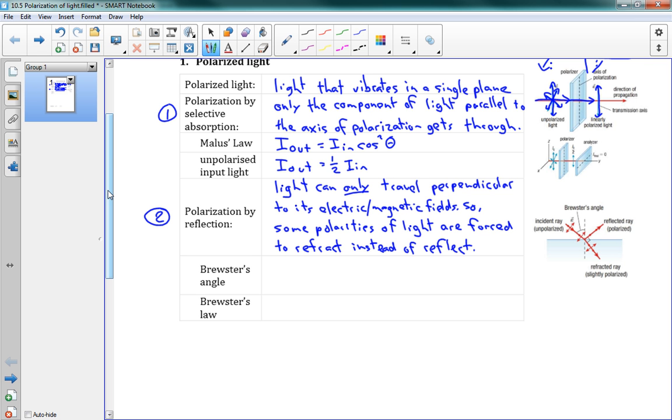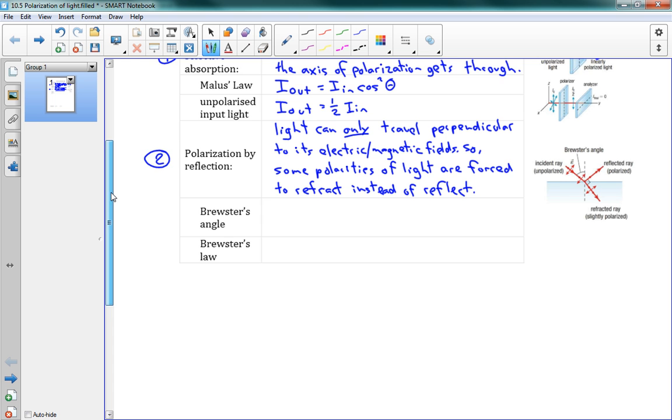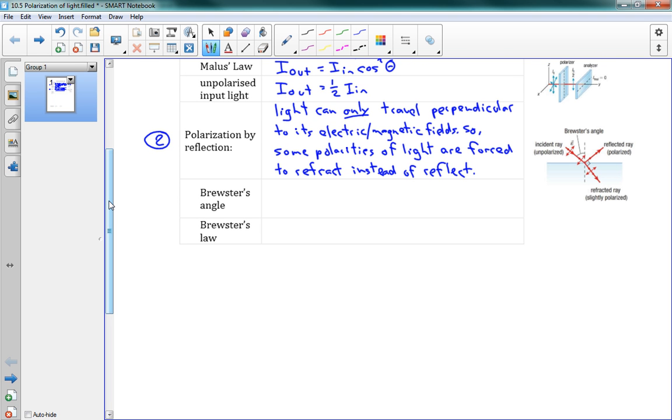Some light is not able to reflect because if it did, it would have to be reflecting in the direction that it was already vibrating, which means it would have to completely change the direction it was vibrating, and that would not work very well. So it resists that reflection and instead just refracts into the medium. And that always happens. Whenever we have a reflection, some of the light is just not able to reflect because of its polarity.